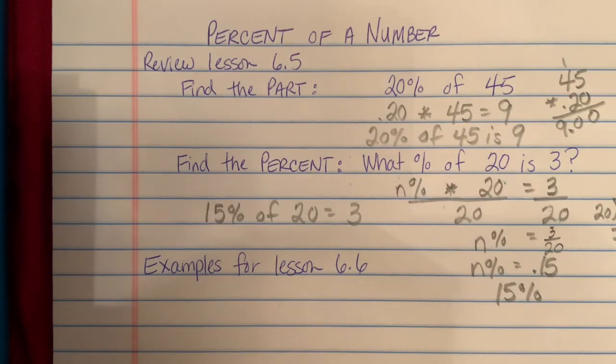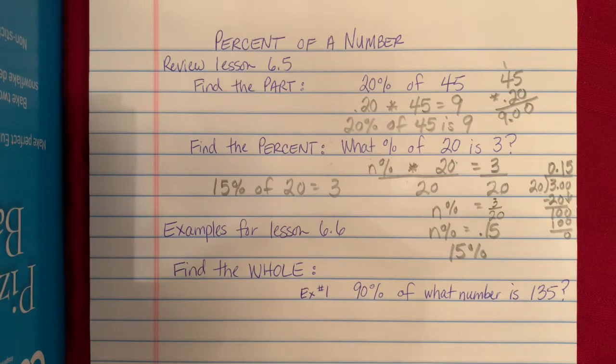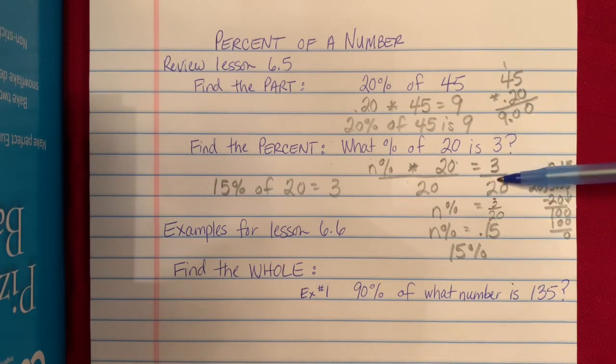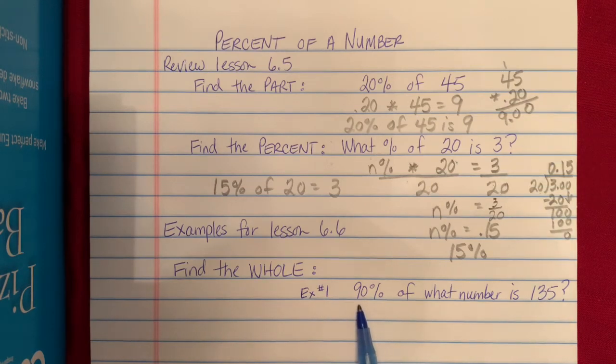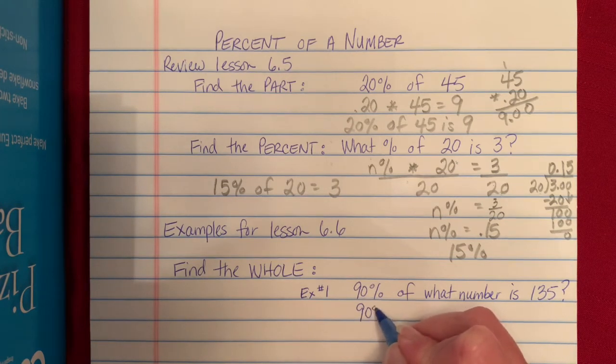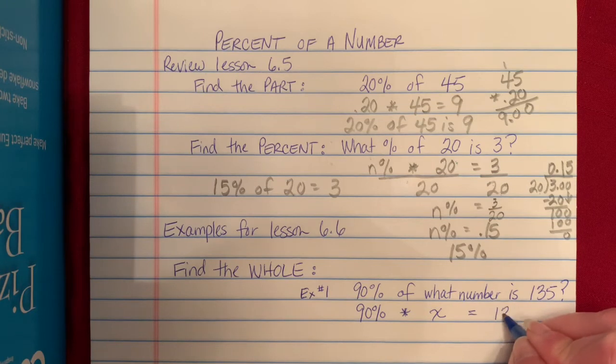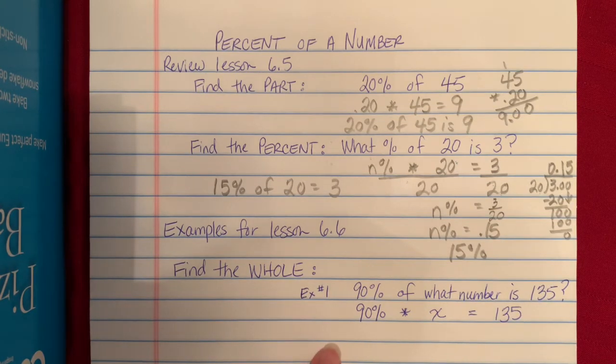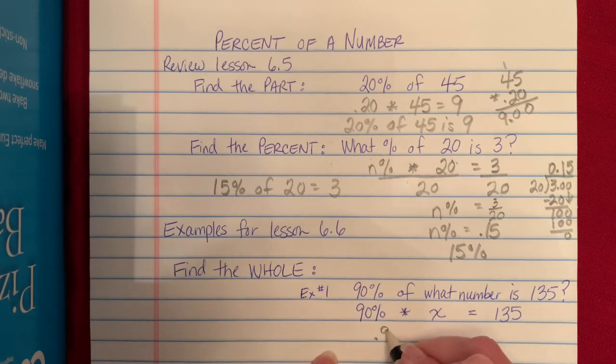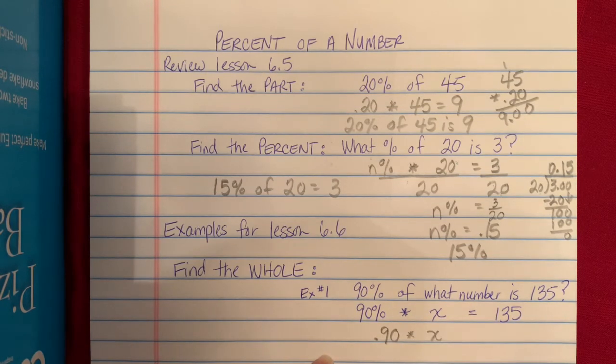So our new lesson, Lesson 6.6, is looking at finding the whole. So we're given a percent of something equals a number, and we need to find that something. So now looking at our examples from Lesson 6.6, we're finding the whole. So we still want to use our equations we've been using to set up to solve for our missing piece. So in example one, we're looking at 90% of what number is 135. So we have 90% of, means multiply, what number is our variable X, is means equals 135 as our part. So remember, we change our percent to a decimal. 90% is 0.90 times X equals 135.